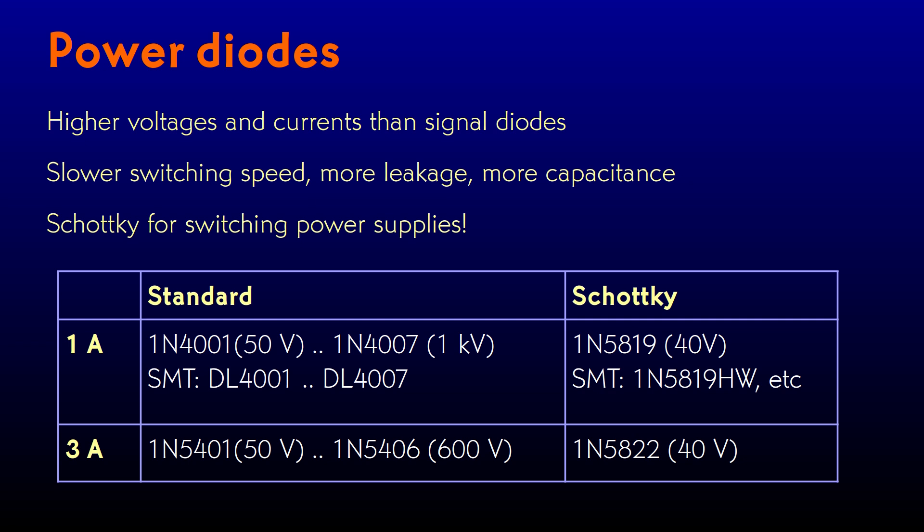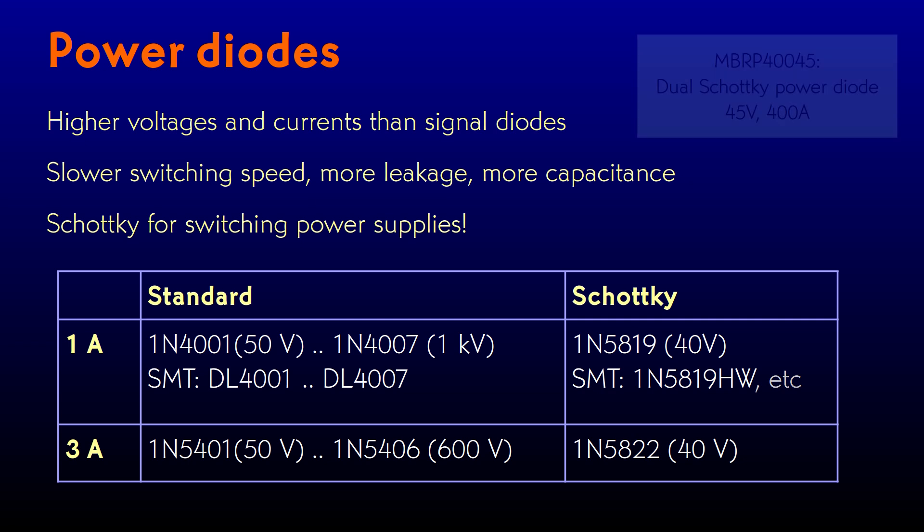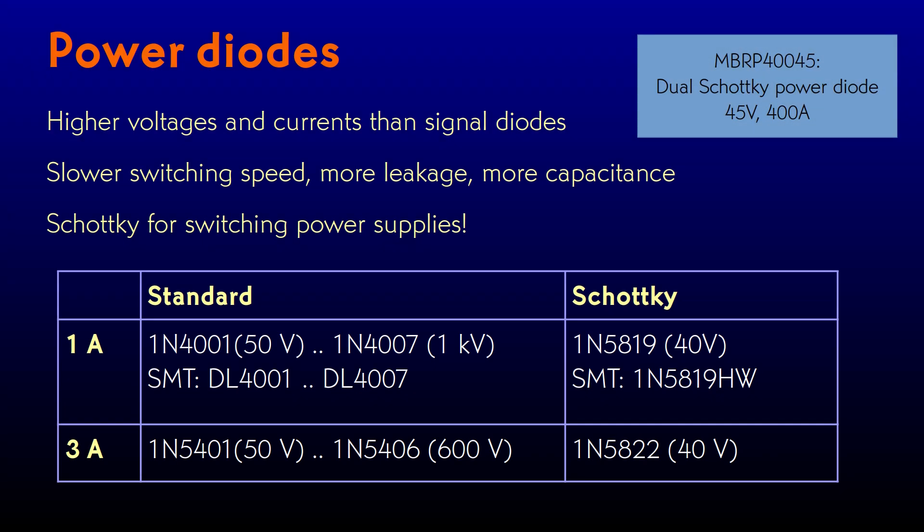You need to look at their data sheets to see how the manufacturers recommend managing the heat. Switching power supplies work at much higher frequencies than the 50 or 60 hertz of the power line, so they need Schottky diodes. For small switchers, the 1N5819, a 1-amp part, and the 1N5822, a 3-amp part, are popular. You can get them much bigger — I've seen a listing for a dual Schottky diode that will handle 400 amperes at 45 volts. I have no idea what the intended application is for that brute.